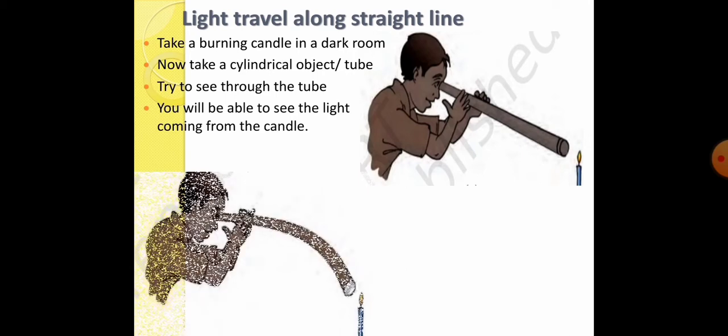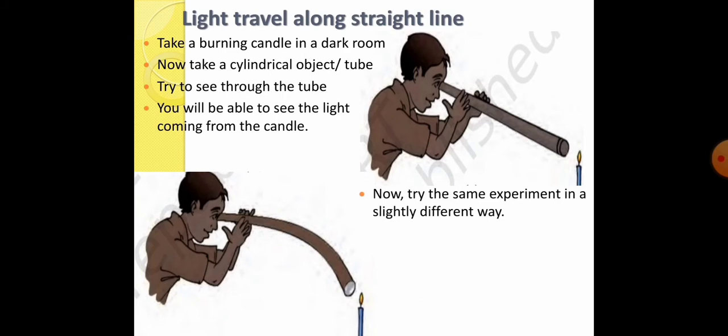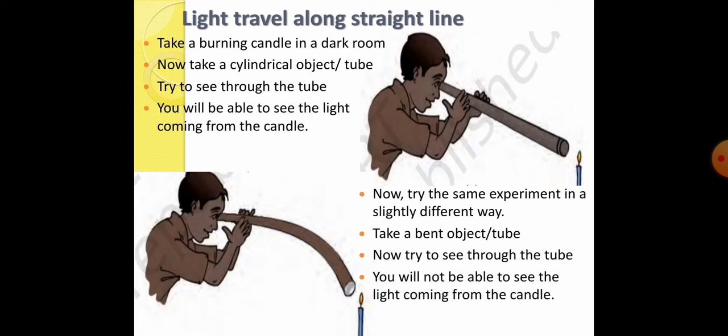Next, now try the same experiment in a slightly different way. Take a bent object or tube. Okay, now try to see through the tube. Okay, as it is mentioned here, the tube should be like this, bent and you can see like this. Now, what you will get? You will be not able to see the light coming from the candle.